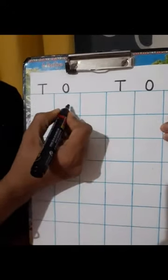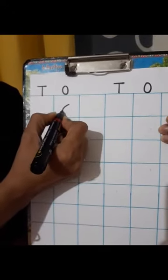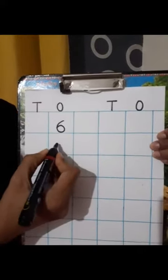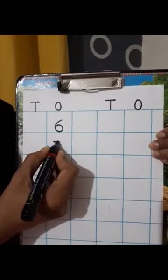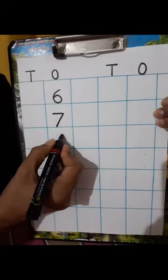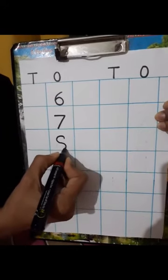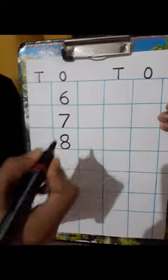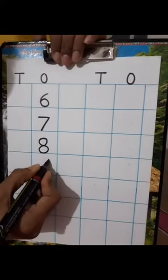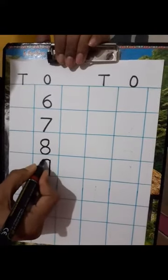We will write first number 6. Touch the blue line below and number 6. Now the next number is number 7. Number 7. Next number is number 8. Number 8.